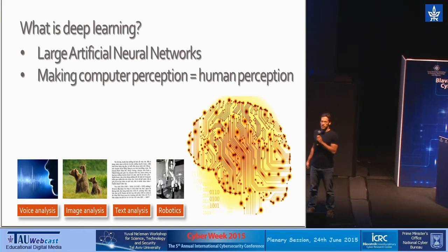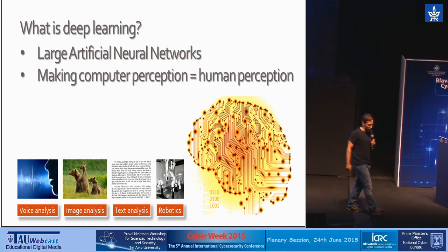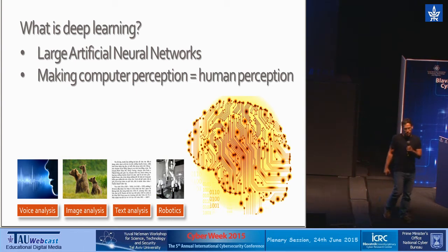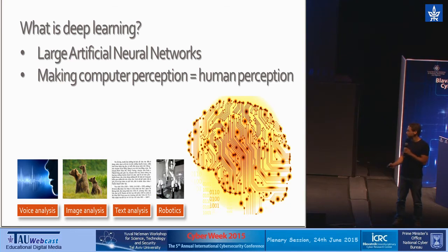This applies in all sorts of fields. We are applying it in voice analysis — understanding what a person is saying and identifying who is the speaker. Image analysis — understanding what's inside the image, and I will show some examples. Text analysis, which is really the new front in natural language processing — as input we get large text and we want to extract all sorts of insights — and also in robotics and related fields.